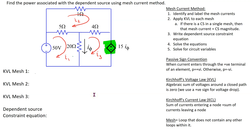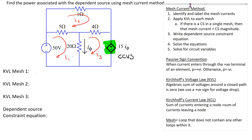In this example we will look at how to apply the mesh current method to a circuit containing a dependent source. The dependent source is highlighted here. Within the symbol there is a plus minus sign, which indicates this component is a voltage source and the magnitude of this dependent source is in terms of a current I phi. This means that this dependent source is actually a current controlled voltage source. The steps to apply the mesh current method to a circuit containing a dependent source are shown here.